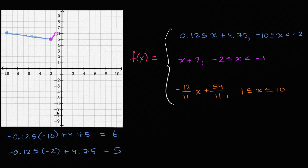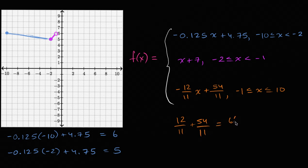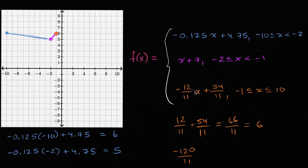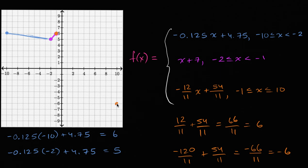Now let's look at this last interval. When x is negative one, this is going to be positive 12 over 11 — because we're multiplying by negative one — plus 54 over 11, which equals 66 over 11, which is equal to positive six. So we're able to fill in that point. When x is equal to 10, we have negative 120 over 11 plus 54 over 11 — that's negative 66 over 11, which is equal to negative six. So when x is equal to 10, our function is equal to negative six. This one doesn't have any jumps in it.